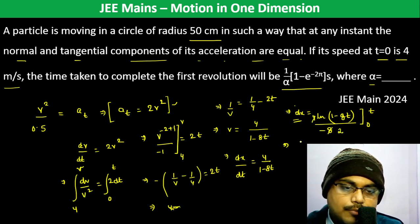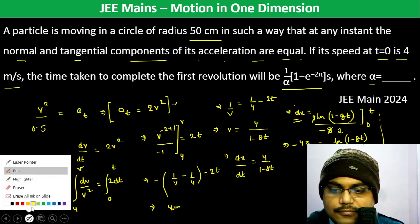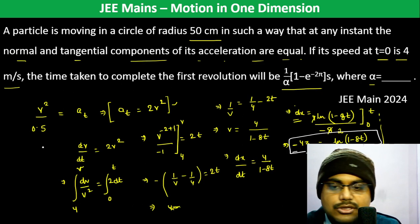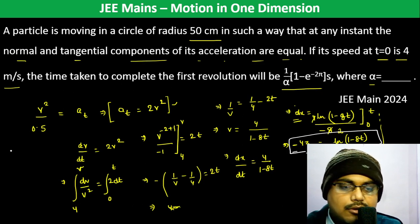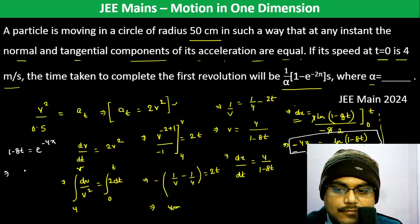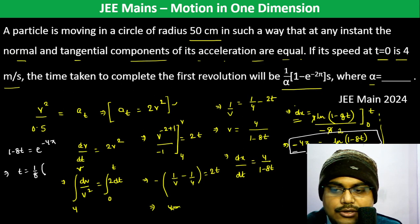The displacement equals 2π (one full revolution), so we get: ln(1 − 8t) = −2π. Therefore 1 − 8t = e^(−2π), and t = (1/8)(1 − e^(−2π)).